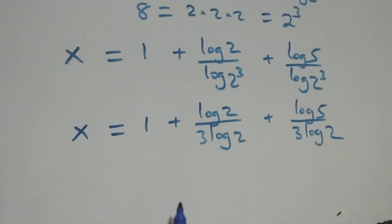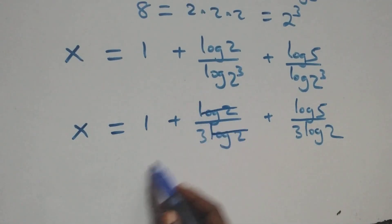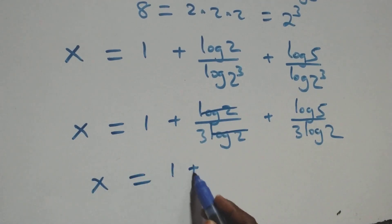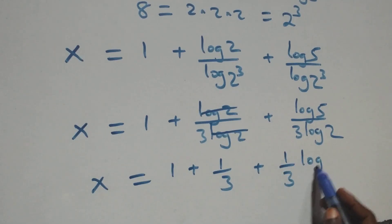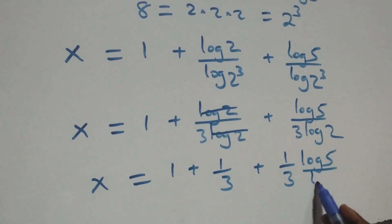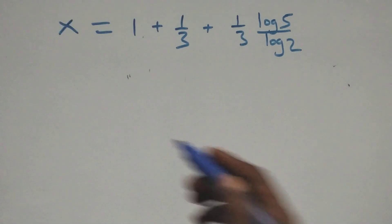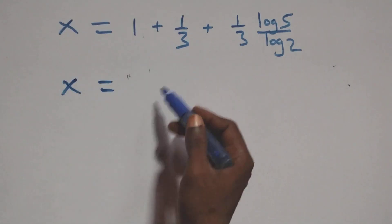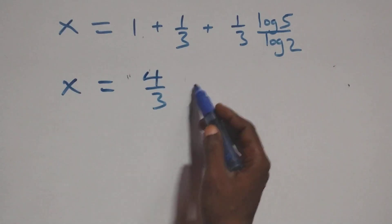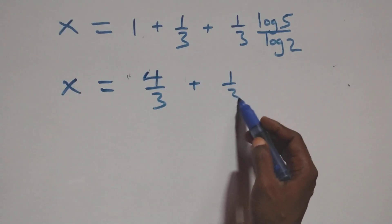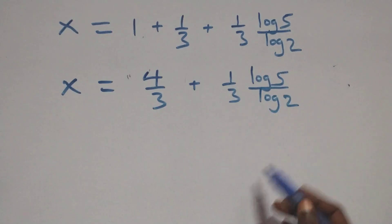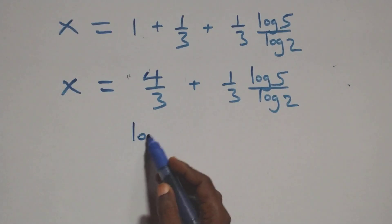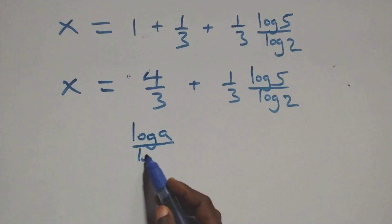We have x equals to 1 plus log 2 over 3 log 2, plus log 5 over 3 log 2. From here, log 2 over log 2 simplifies to 1, so we have x equals to 1 plus 1 over 3 plus 1 over 3 times log 5 over log 2.